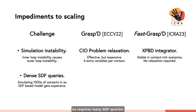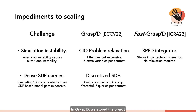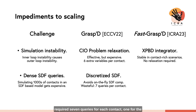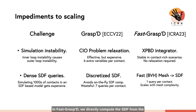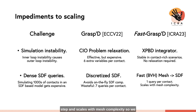The second challenge is that our contact model is based on signed distance functions, requiring many SDF queries. In Grasped, we stored the object SDF in a discretized grid, which let us avoid on-the-fly computation but required seven queries per contact — one for the value and six to finite-difference the normal. In FastGrasp, we directly compute the SDF from the mesh on the fly using a bounding volume hierarchy. This is fast, skips a pre-processing step, and scales with mesh complexity, allowing us to run faster on simplified meshes.